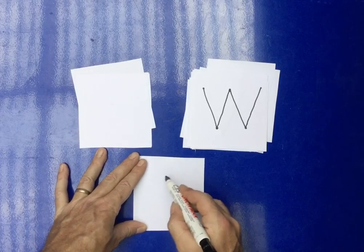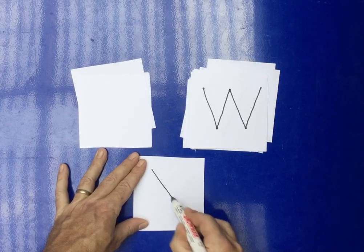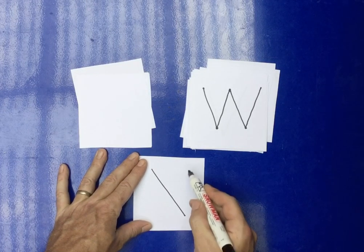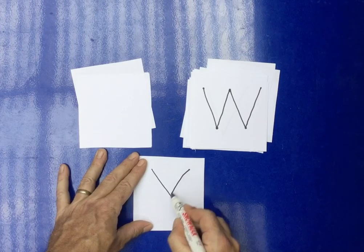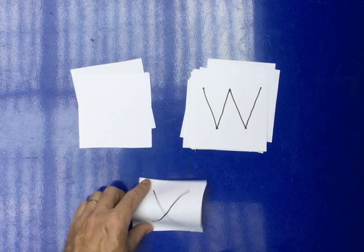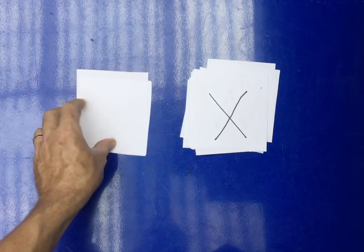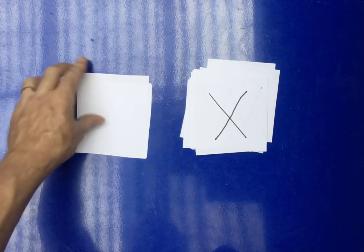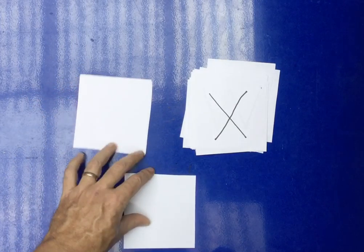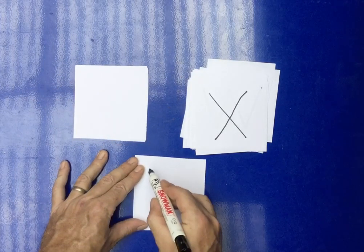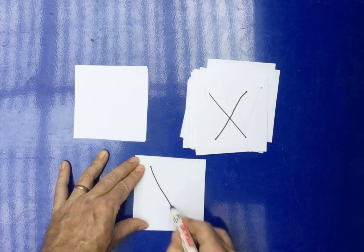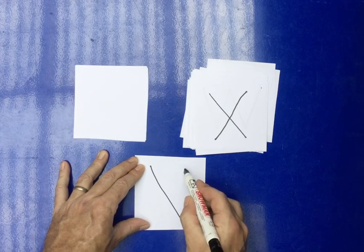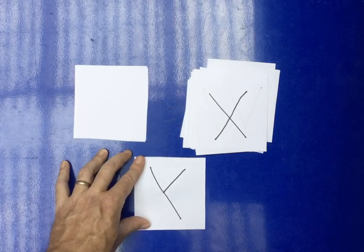W, X. So for the X we make one line down like this, then we go back up to the top here and back down like this. Q, R, S, T, U, V, W, X, Y. To make the Y, we go down sideways and we make it like this.